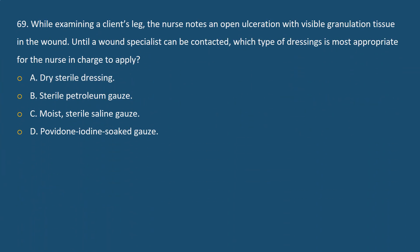Question 69: While examining a client's leg, the nurse notes an open ulceration with visible granulation tissue in the wound. Until a wound specialist can be contacted, which type of dressing is most appropriate for the nurse to apply? A) Dry sterile dressing, B) Sterile petroleum gauze, C) Moist sterile saline gauze, D) Povidone-iodine soaked gauze.